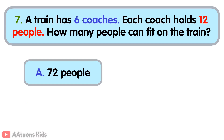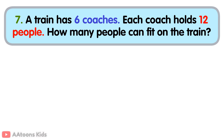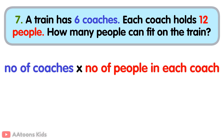Seventy-two people. To find the total number of people, multiply the number of coaches by the number of people each coach can hold. Total number of coaches is six. Number of people each coach can hold is twelve. Now, six multiplied by twelve is seventy-two. So, seventy-two people can fit on the train.